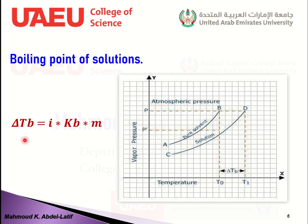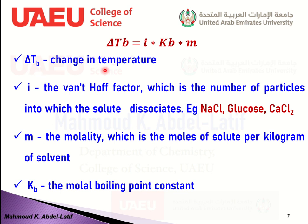Since colligative properties depend mainly on concentration, delta Tb equals i times Kb times m, where i is the Van't Hoff factor — the number of particles into which the solute dissociates — Kb is the molal boiling point elevation constant, and m is the molality defined as the number of moles of solute per kilogram of solvent.